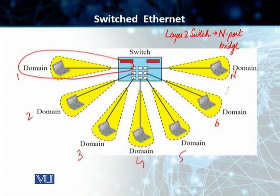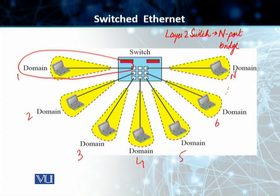The idea of the bridged LAN was extended to switched LAN — switched local area network. Instead of having 2 to 4 networks, we have N networks, where N is the number of stations on the LAN. We have got an N-port switch, which is a layer 2 switch, and it has additional sophistication that allows for faster handling of packets. This evolution from a bridged LAN to the switched Ethernet LAN was a major accomplishment and a major change in our standard Ethernet.